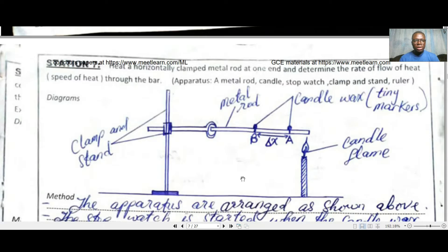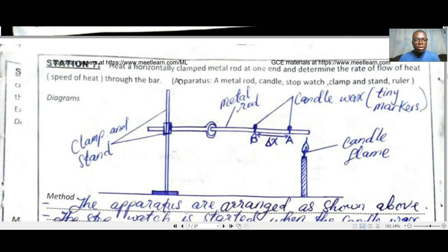In this experiment we're going to be calculating the speed of heat flow. Note that even though it's a station experiment, it can actually be a mainstream experiment — in which case you have to carry as many values as possible, probably 10 or more, plot a graph, and look for the slope or gradient. The experiment asks you to calculate the rate of heat flow — the speed of heat through the bar. The apparatus required includes a metal rod, a candle, a stopwatch, clamp and stand, and a ruler.